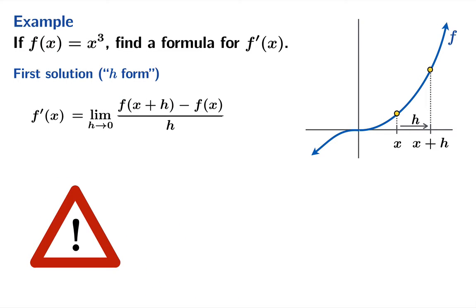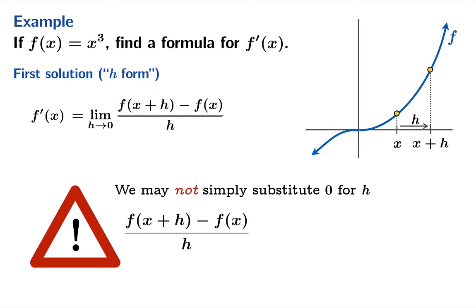Now a word of warning is in order. We may not simply substitute zero for h. Looks tempting but that's going to be a problem and it's quite generally going to be a problem with these derivative calculations because if you plug in zero for h you're just going to get zero over zero which is an indeterminate form.